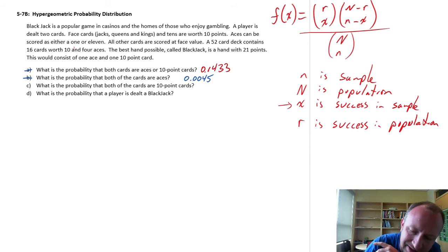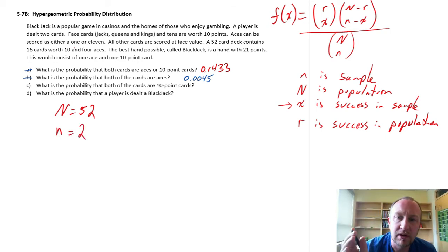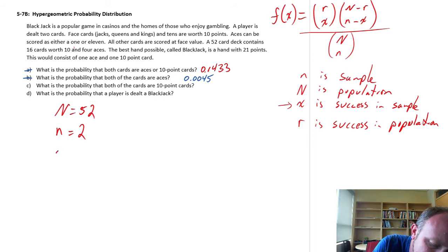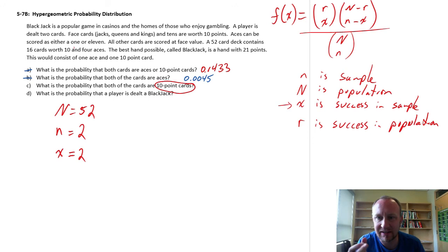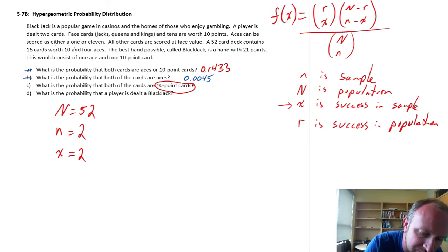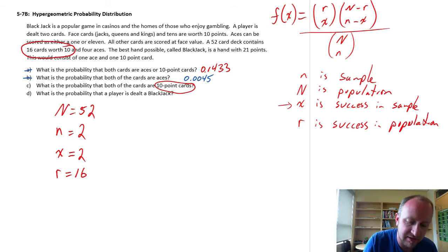So for part C, we still have population, our population size is still 52. We're still drawing just two cards from that deck. We are only accepting successes, so I want both of my cards to be a success, and we are now defining a success as a 10-point card. So if a success now is a 10-point card, well in our problem I see, well I have 16 cards are worth 10. So our number of successes in the population is 16.